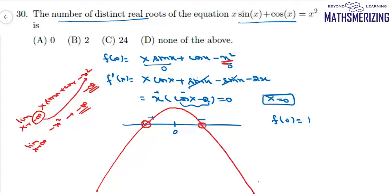The graph intersects the x-axis at two distinct points, so the number of distinct real roots is 2, which is option B.